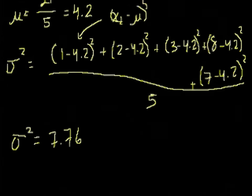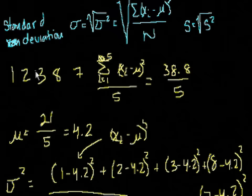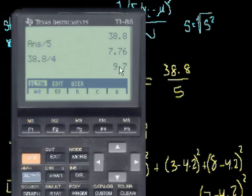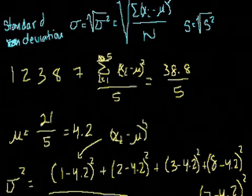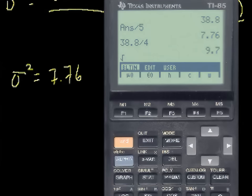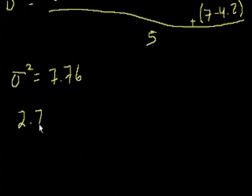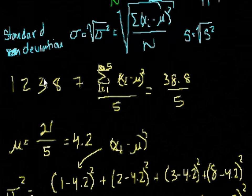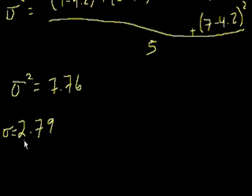If this were a sample from a larger population rather than the population itself, we'd divide by n minus 1 — that is, by 4 instead of 5 — giving a sample variance of 38.8 divided by 4, which equals 9.7. Once you have the variance, the standard deviation is simply the square root: the square root of 7.76 is approximately 2.79, which tells us, on average, how far the numbers are from the mean of 4.2.